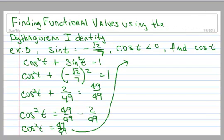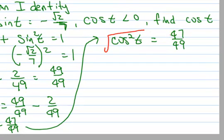Let's continue this problem up here. Let me rewrite it. Cosine squared of T equals 47/49. Well, the cosine of T is squared. So to get to the cosine, I have to unsquare it, which means I have to take the square root. If I take the square root of the left side, I must take the square root of the right side.